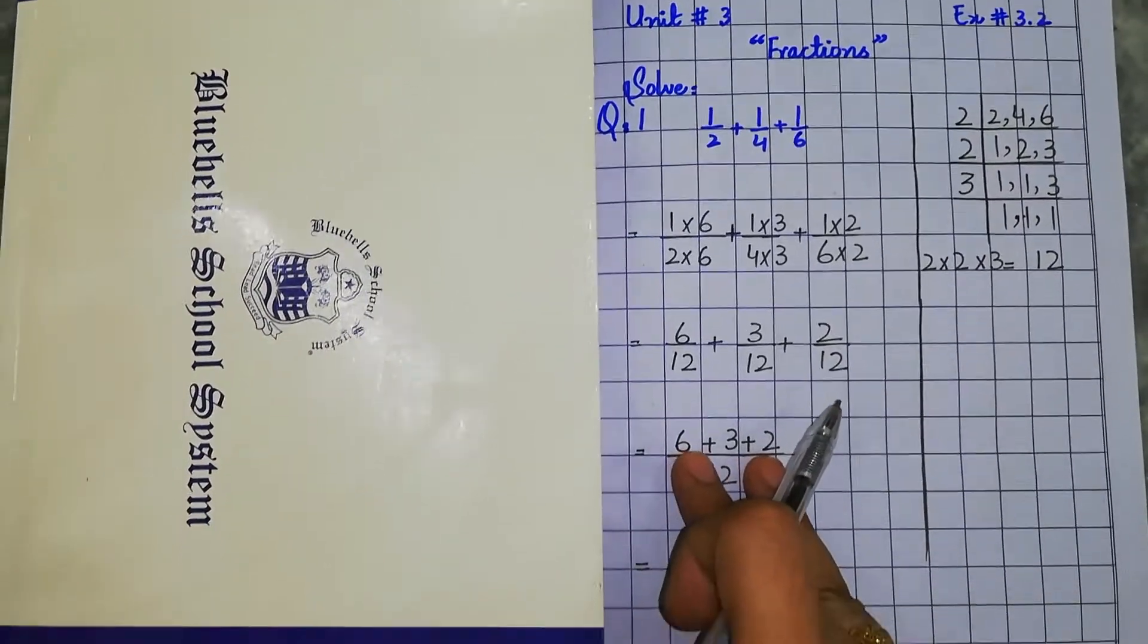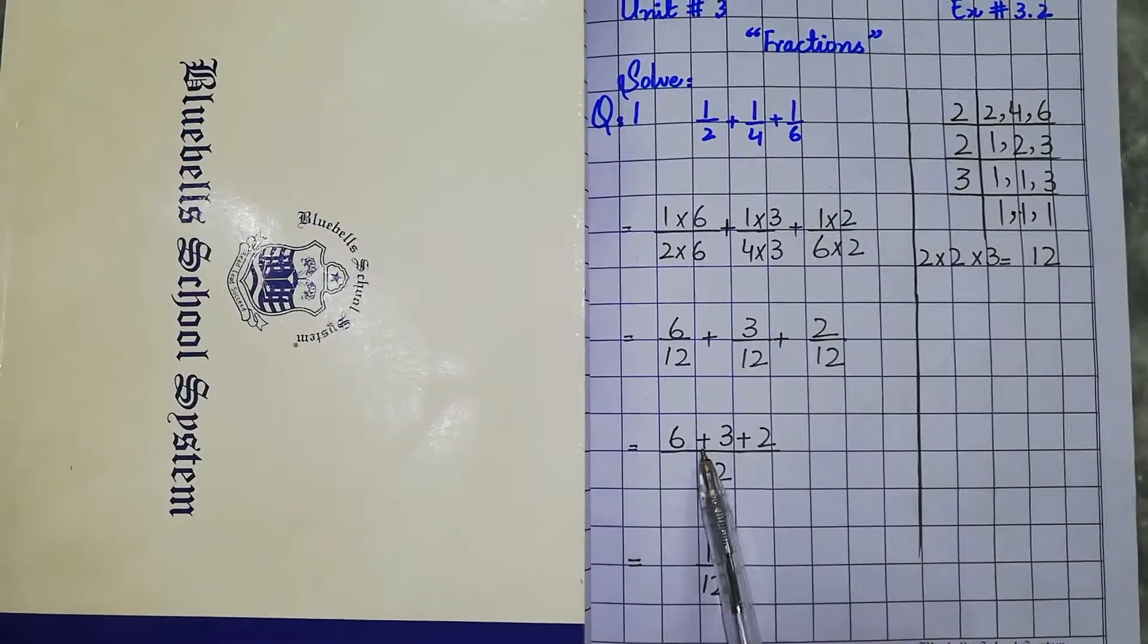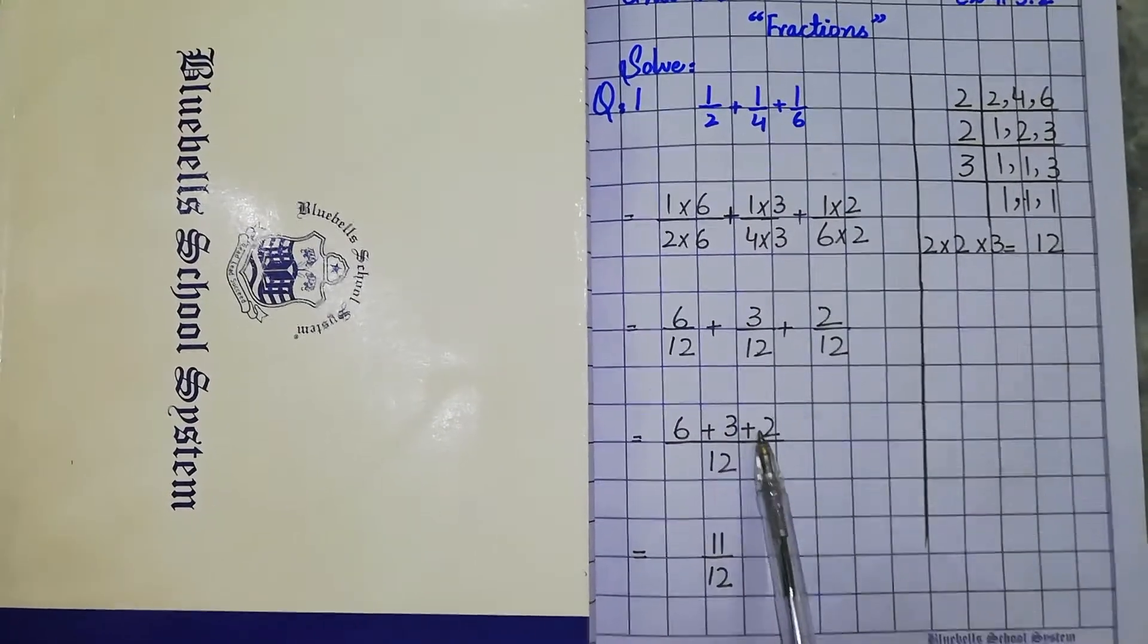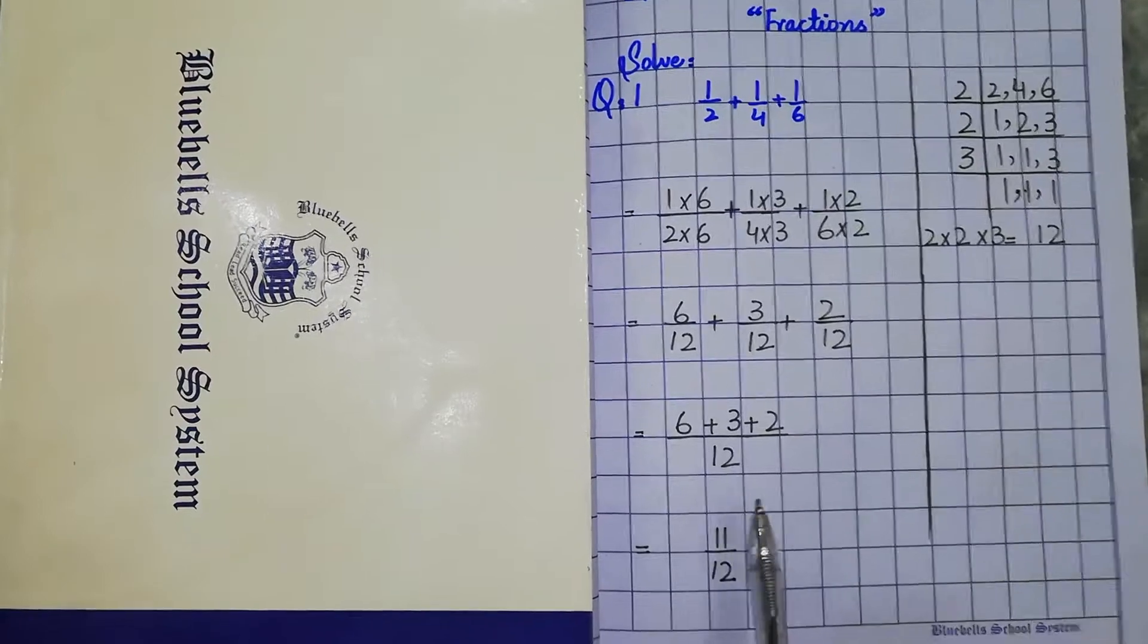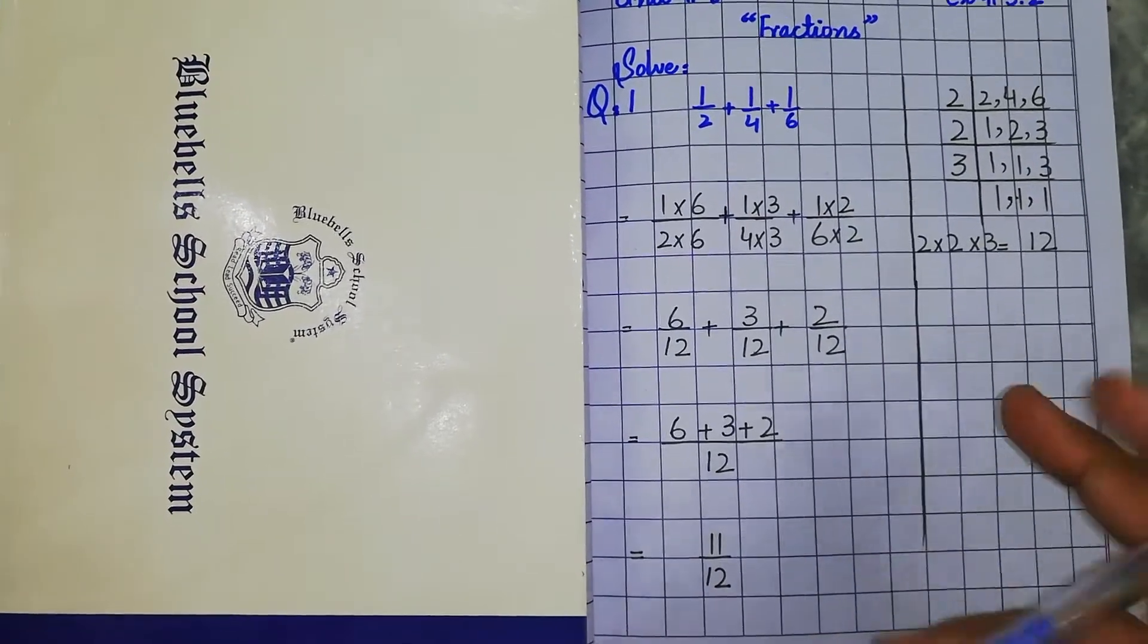Now, we add: 6 plus 3 plus 2 equals 11. So 11 over 12 is our answer.